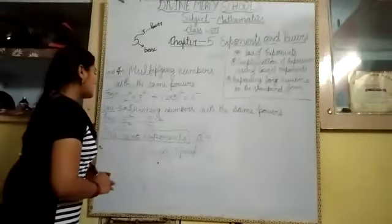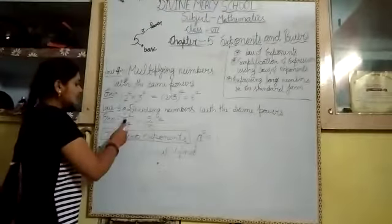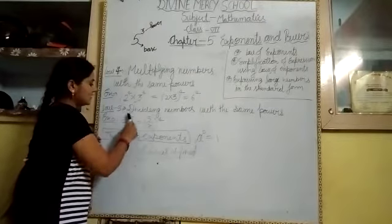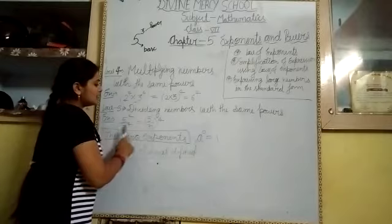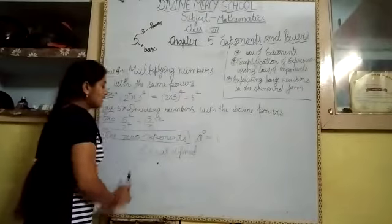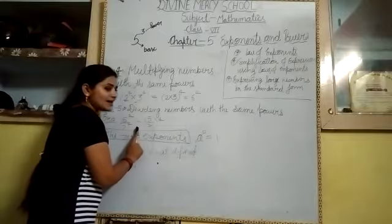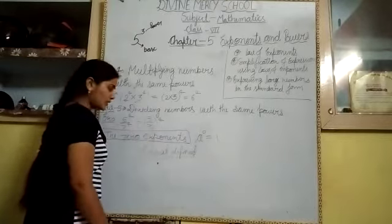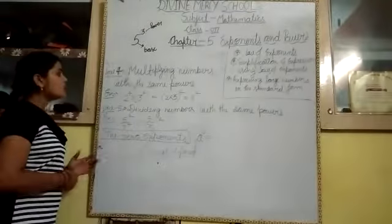Law fifth: dividing numbers with the same powers. Suppose five power four divided by seven power four — both have different bases but the same power. Then we can write it as five divided by seven, whole power four. This means five power four divided by seven power four equals five over seven, whole power four. This is the fifth law.